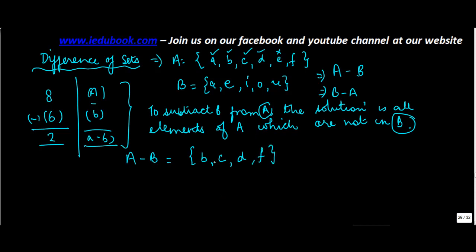So A minus B will be equal to B, C, D, F. So all those elements of A which are not in B are forming part of this solution.